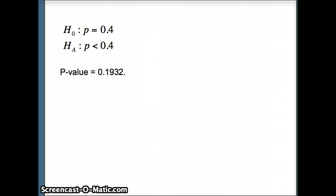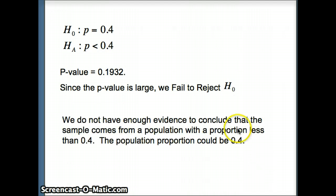So there's our h-naught and h-a, and there's our p-value. But if the p-value is large, what do we do? We're going to say since the p-value is large, we fail to reject h-naught. And then we want to go ahead and say what that means in context. And if we fail to reject h-naught, that means we don't have enough evidence to say that h-a is true.